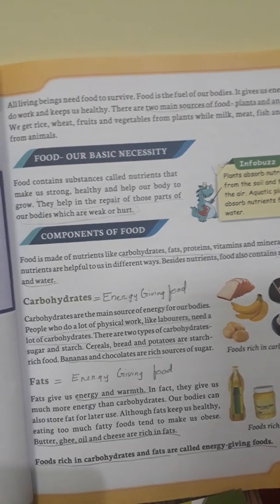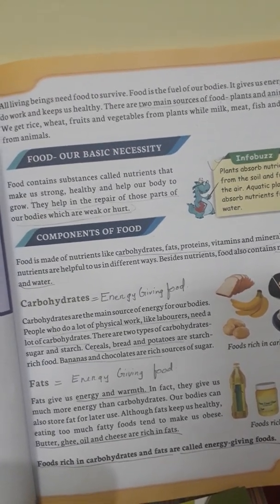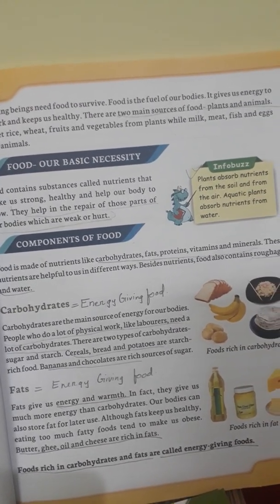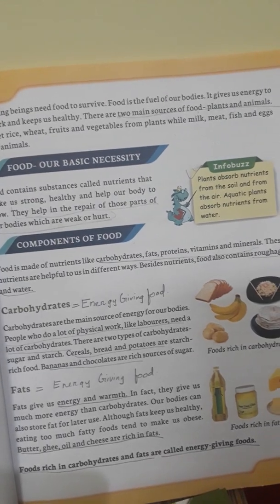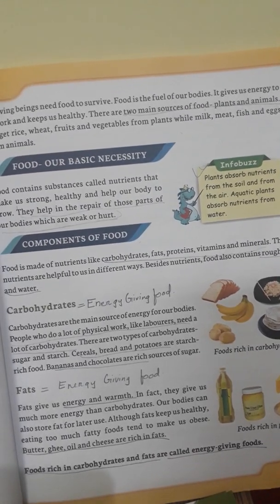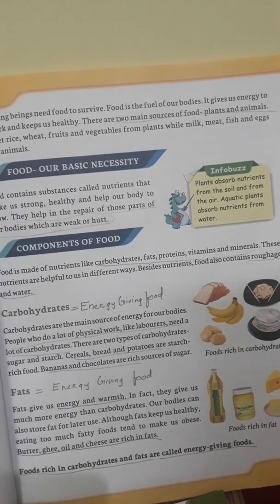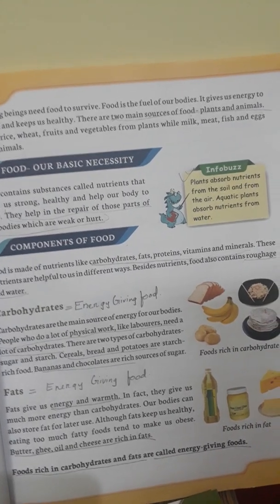Components of food: food is made up of nutrients like carbohydrates, fats, protein, vitamins and minerals. Besides nutrients, foods also contain roughage and water, which is equally important.